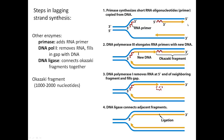For the lagging strand at the top, primase makes the primer, DNA polymerase 3 comes and makes that strand, then it will hop back and find a new RNA primer and extend that one as well. So now you have two of these short fragments. These fragments are called Okazaki fragments, and they tend to be somewhere between 1,000 and 2,000 nucleotides long.